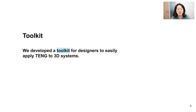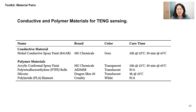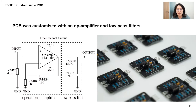Based on this working principle, we developed a toolkit for designers to easily apply TENG to 3D systems. This toolkit includes material pairs, a customizable PCB, and a microcontroller. Spray painting can be easily applied onto 3D surfaces. We experimented with four material pairs: liquid conductive spray paints paired with four different polymer materials. Since raw signals are tiny and noisy, we combined an amplifier and low-pass filters into a custom PCB.